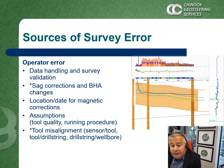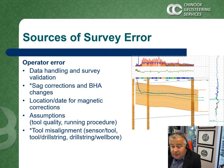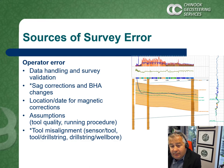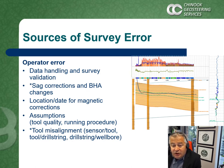The geosteering cross-section depicted here shows a well that was planned parallel to geo-model structure, which was expected to trend upwards. The geosteering correlation is quite clear, showing that the beds are dipping down rather than up. This divergence is most probably due to compounded survey error where inclination reads consistently higher.